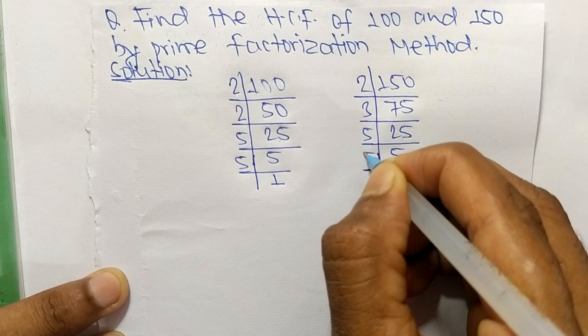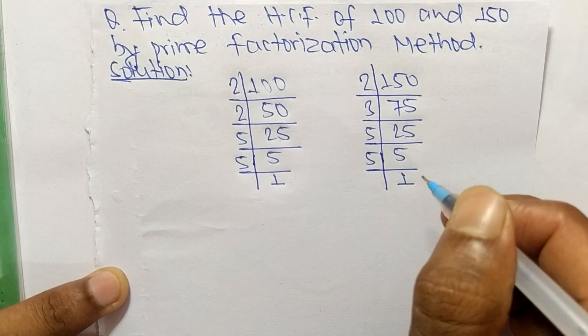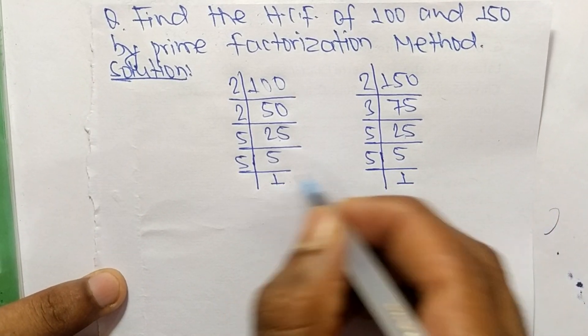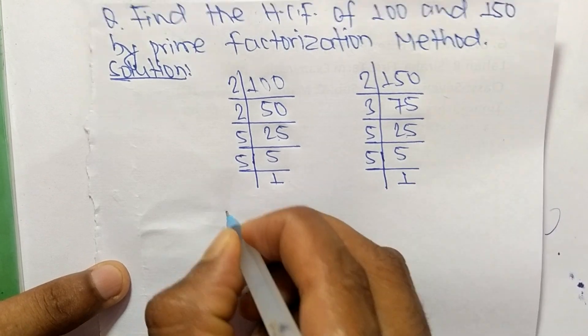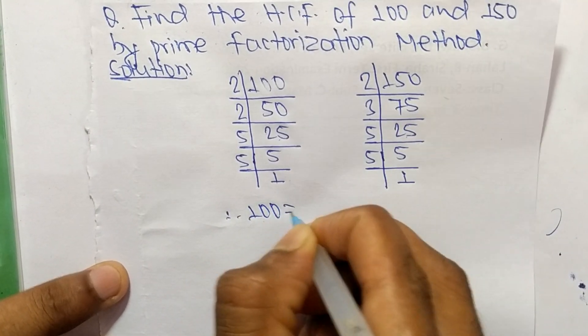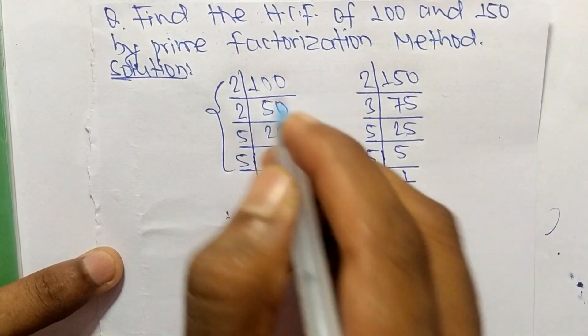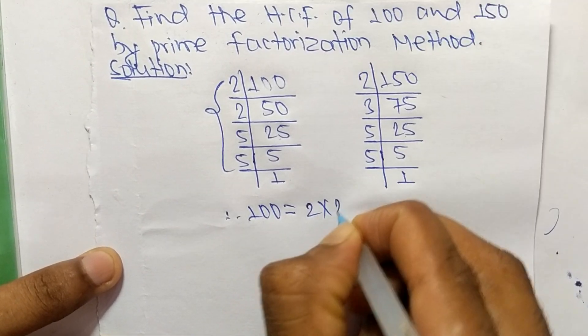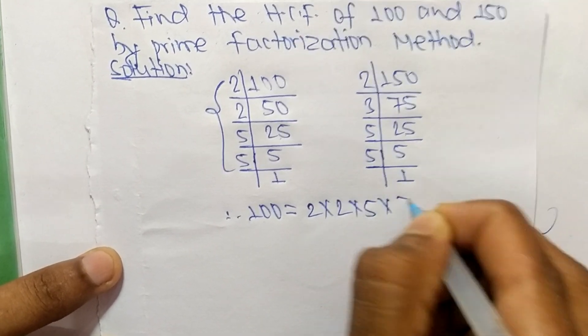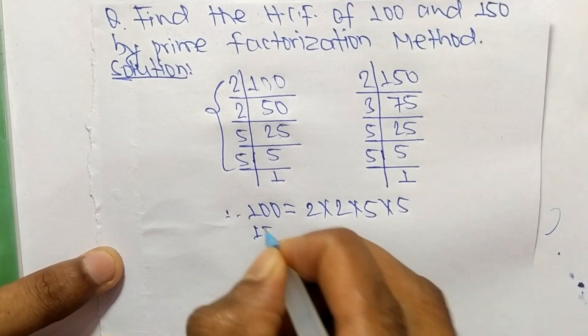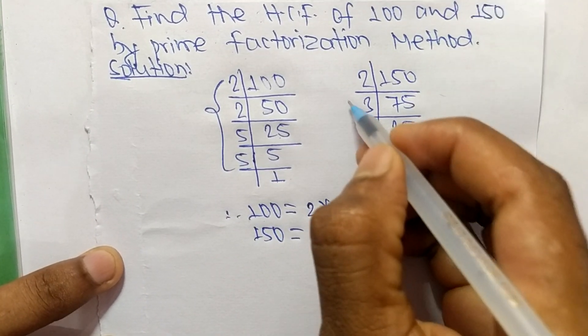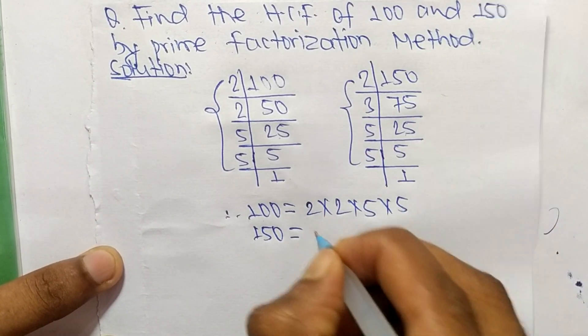So from these prime factors we can write: 100 is equal to 2 times 2 times 5 times 5. Likewise, 150 is equal to 2 times 3 times 5 times 5.